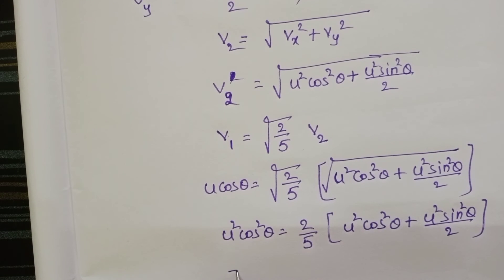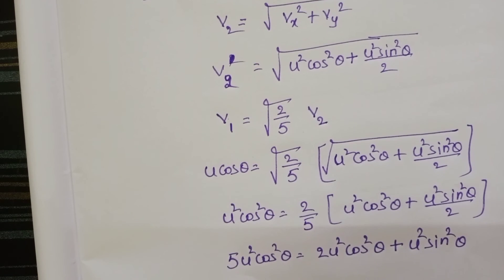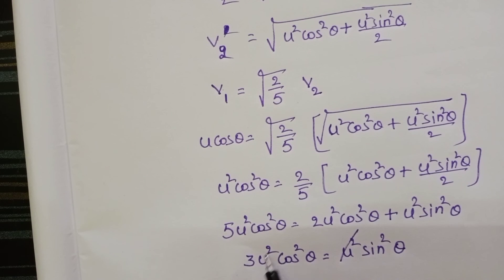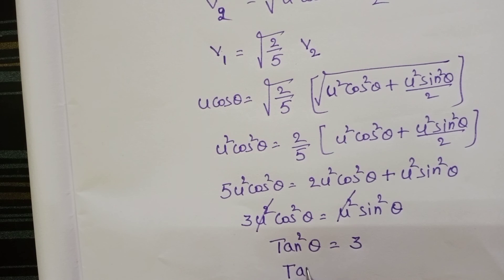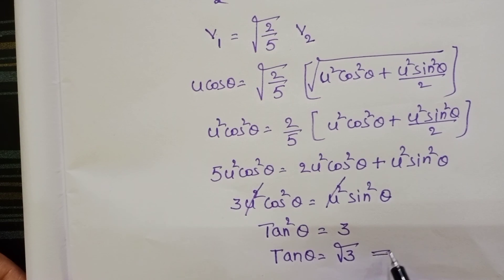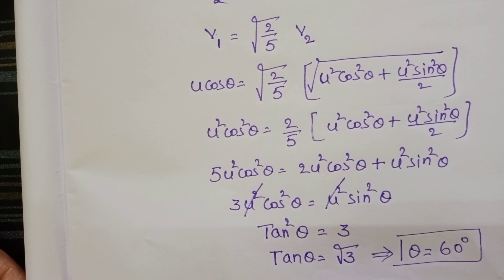Multiplying both sides by 5: 5u² cos²θ = 2u² cos²θ + u² sin²θ. Here the 2 in the numerator and denominator cancel. So 5u² cos²θ - 2u² cos²θ = 3u² cos²θ = u² sin²θ. Cancelling u² from both sides, sin²θ / cos²θ = tan²θ = 3. Therefore tan theta equals root 3, giving theta equals 60 degrees. The angle of projection is 60 degrees.